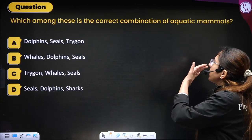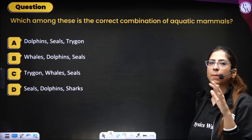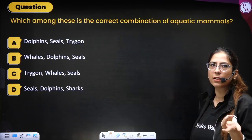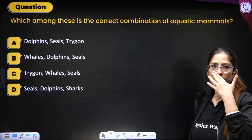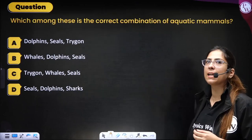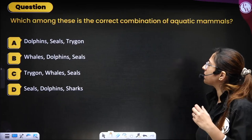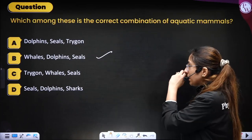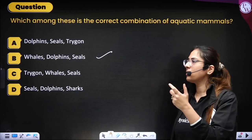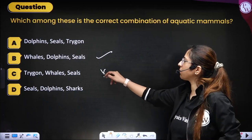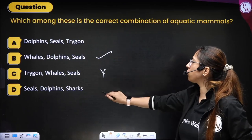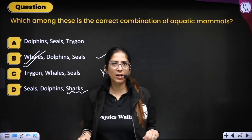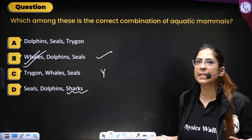Next question: which is the correct combination of aquatic mammals? Dolphins, seals, and Trigon — Trigon is not a mammal. Whales, dolphins, and seals — all are mammals, this looks correct. Trigon, whales, and seals — Trigon is not a mammal. Seals, dolphins, and shark — shark is not a mammal. Correct option is B — whales, dolphins, and seals.